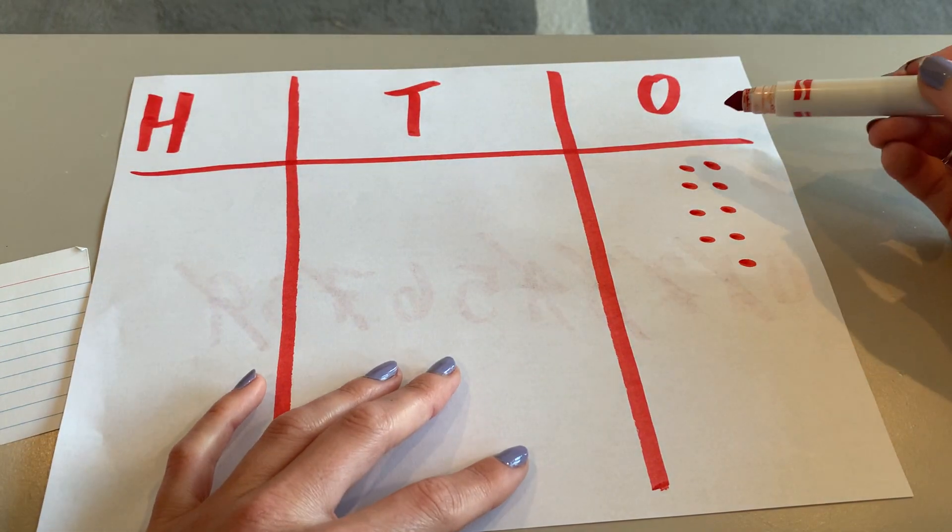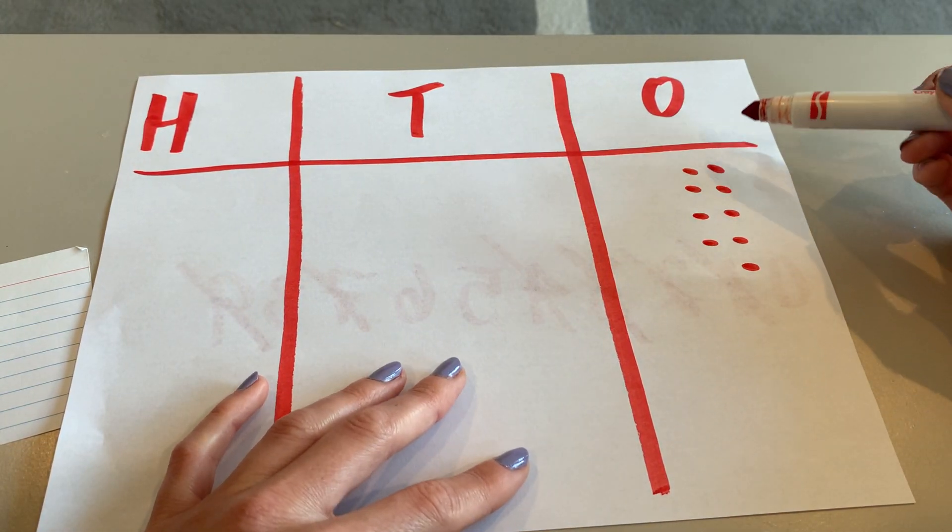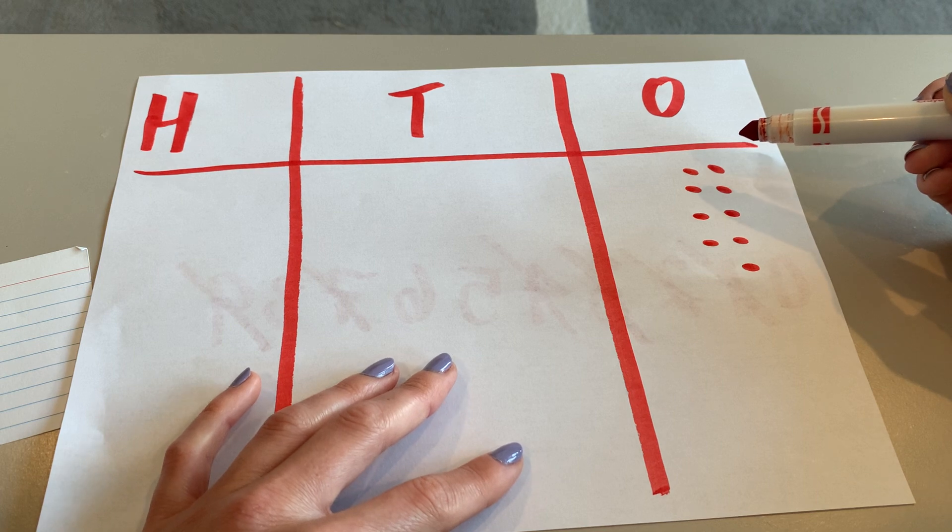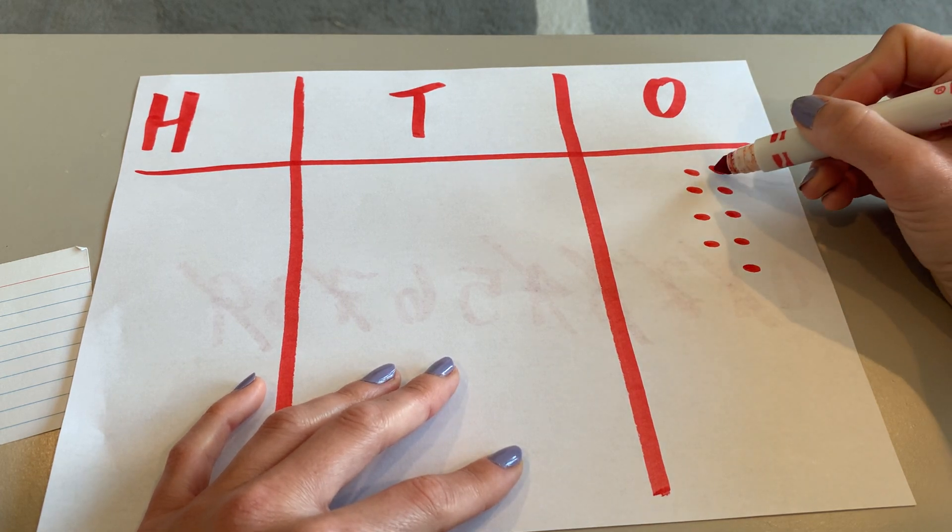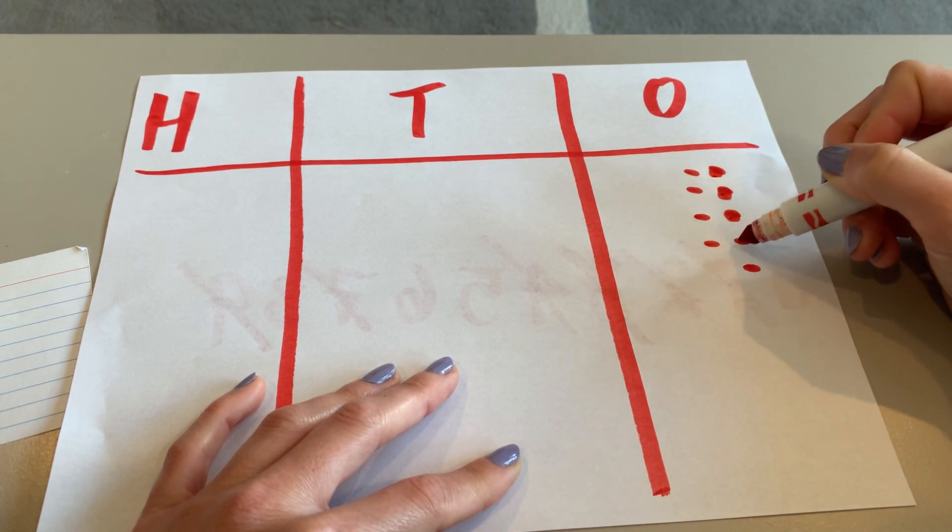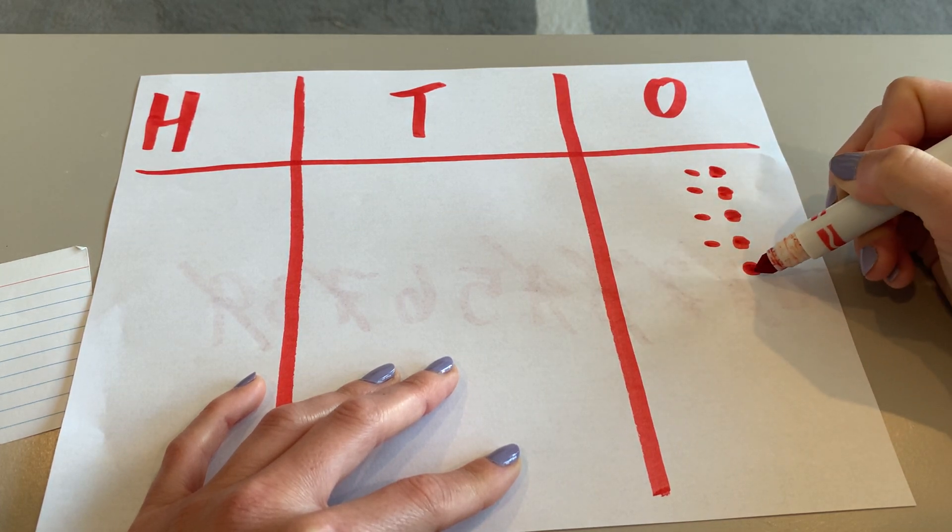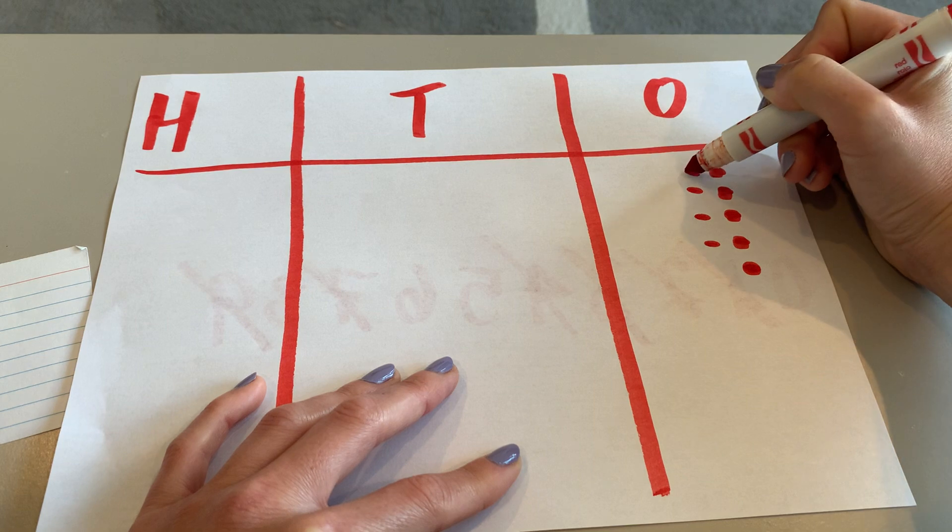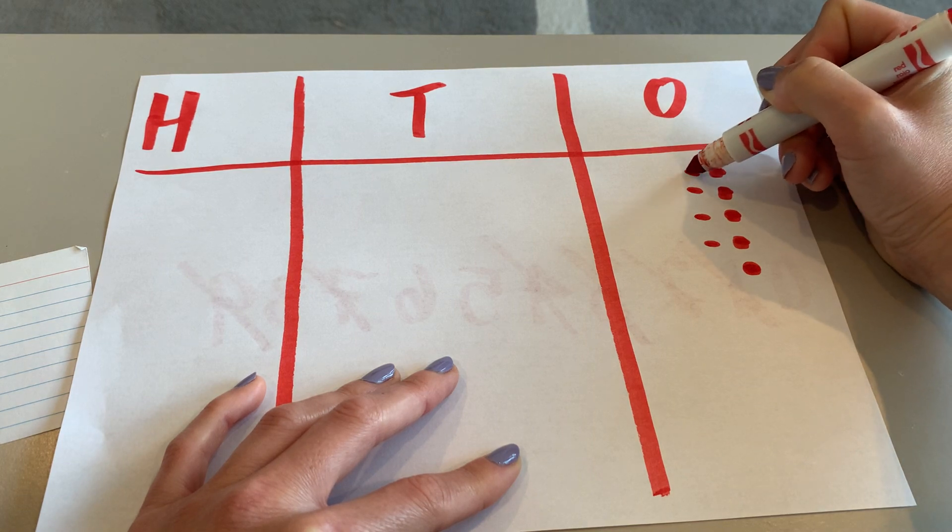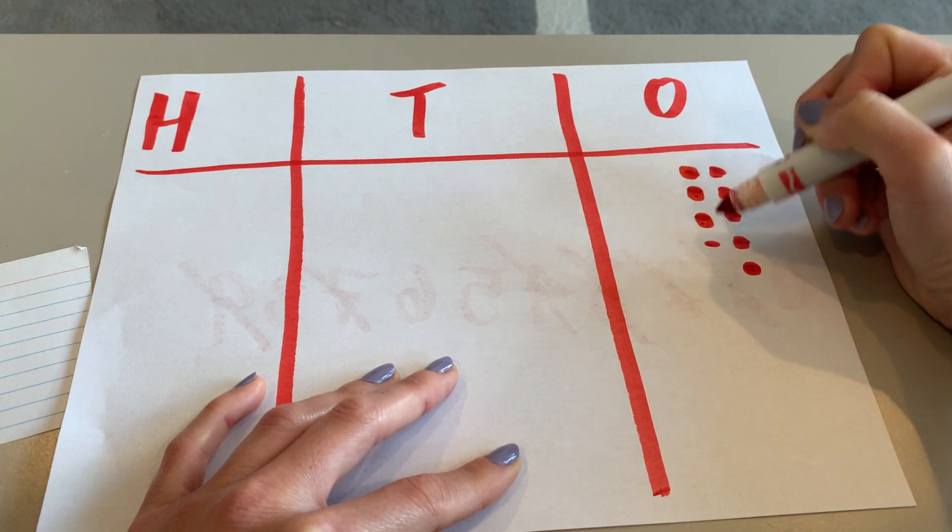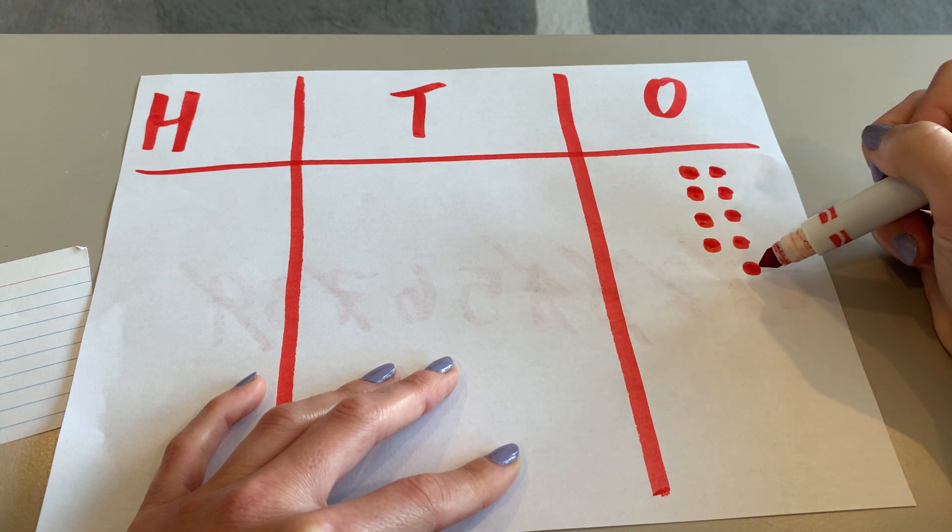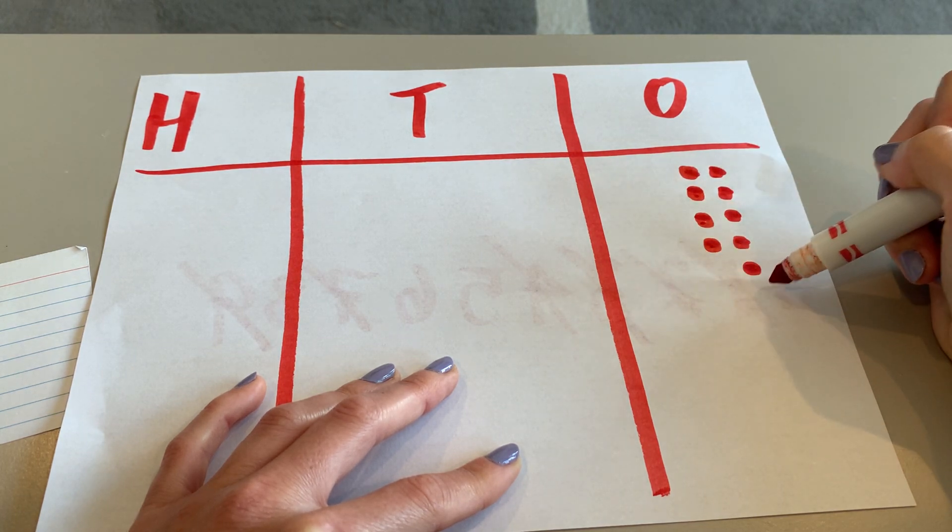Now remember when you're drawing ones, you want to set them up like a ten frame. So if your ones digit is bigger than five, you draw one, two, three, four, five ones units on this side. But if you reach five, you have to go over to the next side to keep counting. Six, seven, eight, nine. Make sure you only have five in each row.